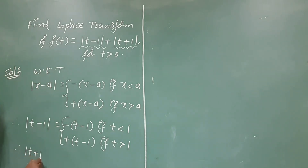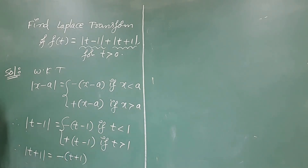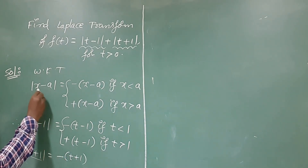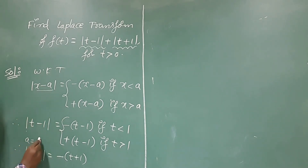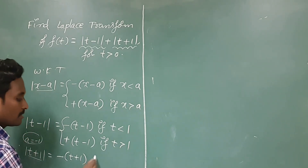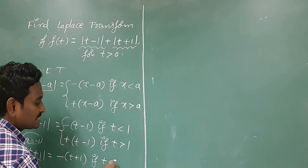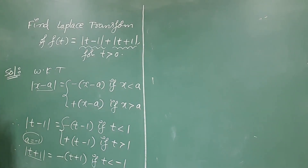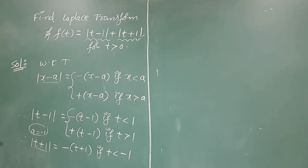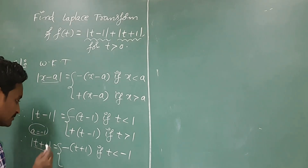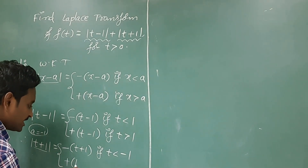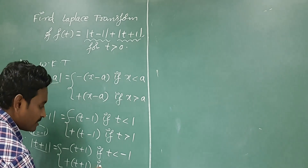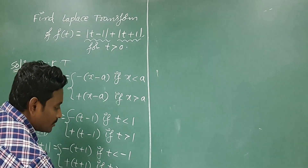In a similar way, modulus of t plus 1 equals minus of (t plus 1) — don't forget it. If you compare t plus 1 with x minus a, then a would be minus 1. So modulus of t plus 1 is minus of (t plus 1) if t is less than minus 1, and positive of (t plus 1) if t is greater than minus 1.